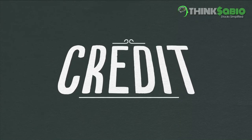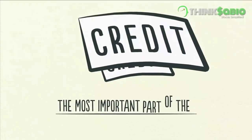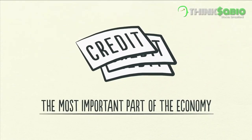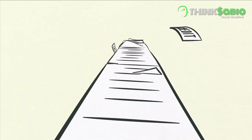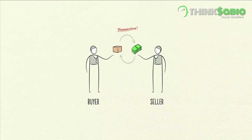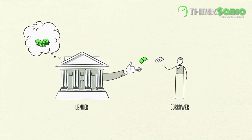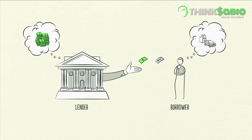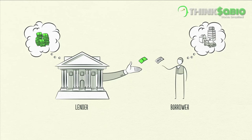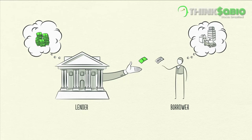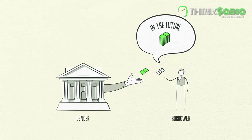Credit is the most important part of the economy and probably the least understood. It's the most important part because it's the biggest and most volatile part. Just like buyers and sellers go to the market to make transactions, so do lenders and borrowers. Lenders usually want to make their money into more money, and borrowers usually want to buy something they can't afford, like a house or a car, or they want to invest in something like starting a business. Borrowers promise to repay the amount they borrow, called principal, plus an additional amount, called interest.